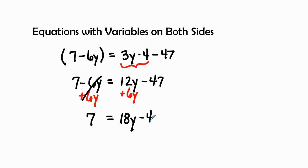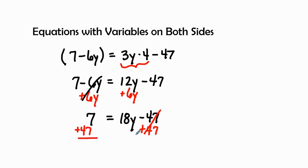We bring down negative 47. Now let's take this negative 47 and add 47 to both sides. This cancels the 47 out to 0, and then we add 47 to 7 on the left hand side. 47 and 7 gives us 54.